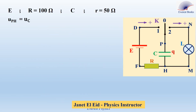Consider the circuit. We have an ideal battery of electromotive force capital E, a resistor of resistance capital R which is equal to 100 ohms, a capacitor of capacitance C, a lamp which is considered as an ideal resistor of resistance small r which is equal to 50 ohms, and an SPDT switch K and connecting wires. Take UPH as Uc.